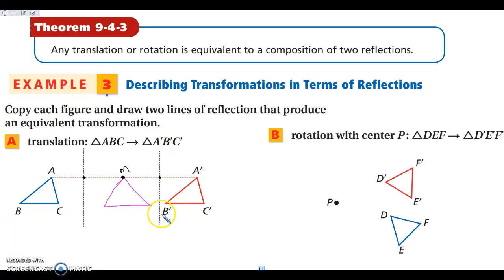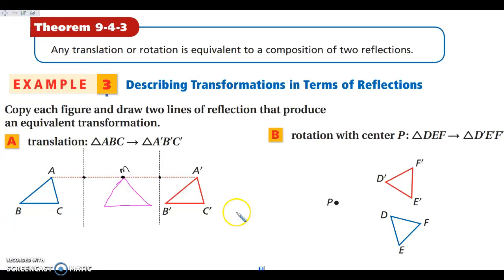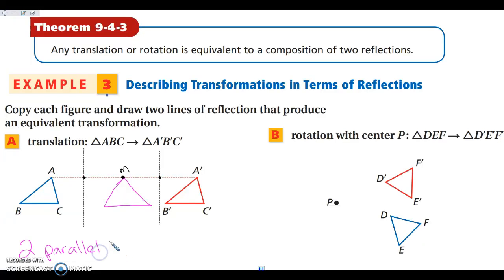Then if I reflect that again over this second line, I end up at A prime, B prime, C prime. So if I reflect over two parallel lines, from beginning to end it's just a translation. Two parallel lines give you a translation.